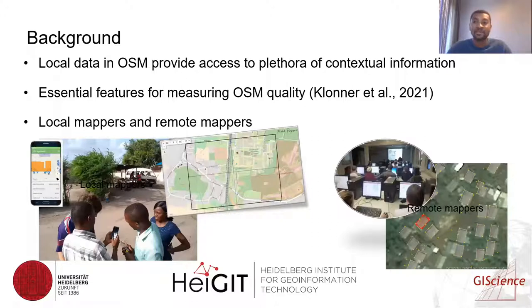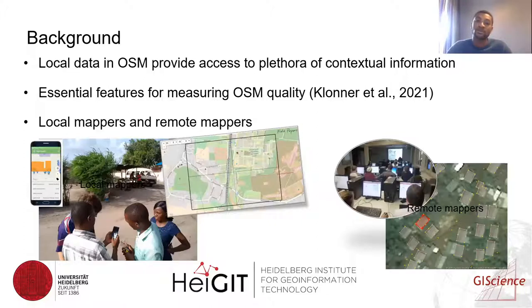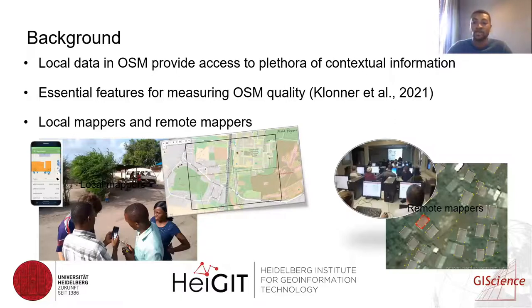The increasing availability and importance of local data in OSM has been largely acknowledged. Local data provides access to several contextual information, which can be used for several applications and is also an essential feature for measuring OSM quality. Usually mapping activities in OSM can be grouped into local mappers and remote mappers. Remote mappers can map from anywhere, while local mappers tend to have local knowledge and contribute only locally.